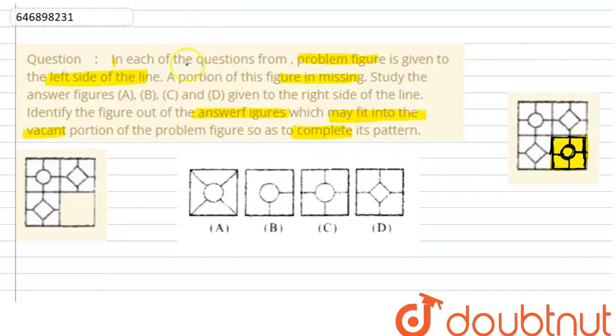So option A is not like this, option B is not like this, option C is like this, option D is not like this. So option C is the correct answer, the answer is C.